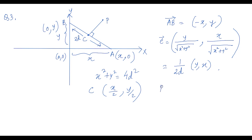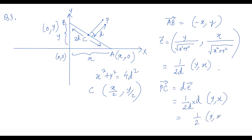The vector PC has length d, so it equals d times the unit vector, giving (d/2d)(y, x) = (1/2)(y, x). The coordinates of P are therefore the coordinates of C plus this vector: (x/2 + y/2, y/2 + x/2). So the coordinates of P are ((x+y)/2, (x+y)/2).